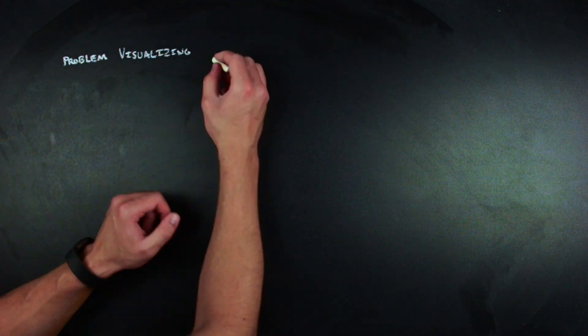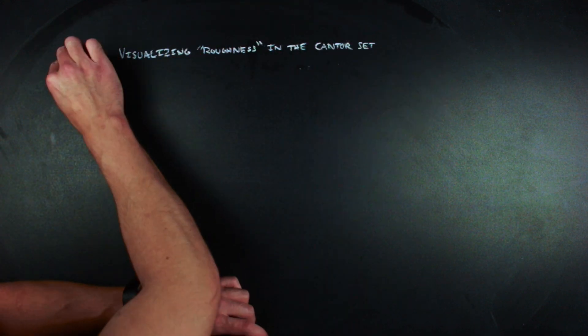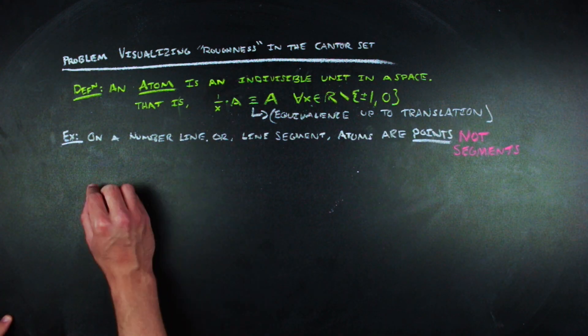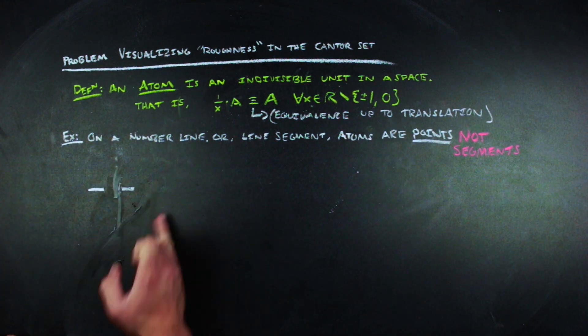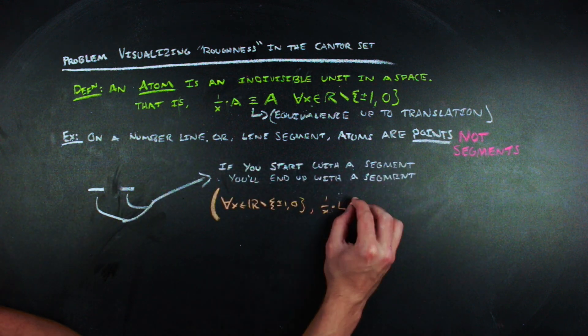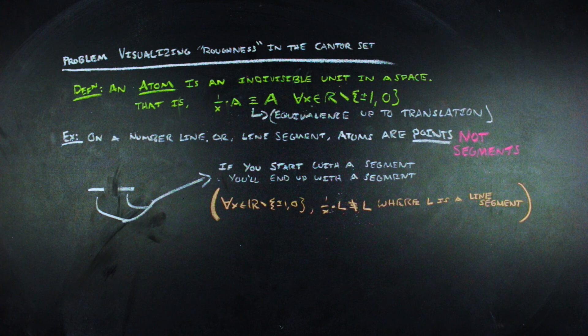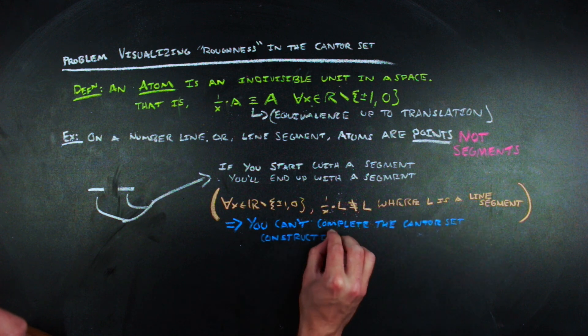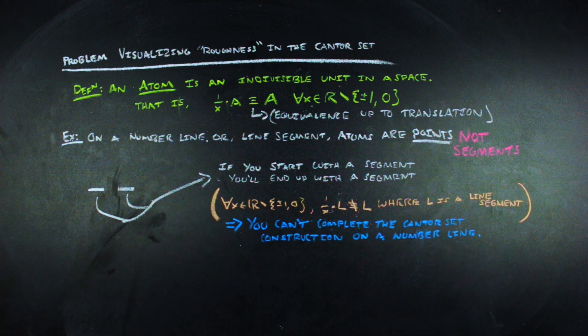The problem of visualizing the roughness of a Cantor set on a number line is that the atom of a number line is a point. No matter how many times you fruit ninja your way through the number line, you can always break up the resultant line segments into smaller line segments that are not atoms of the number line. You're never going to cut a line segment in the way described by the Cantor construction to get just a point left over.